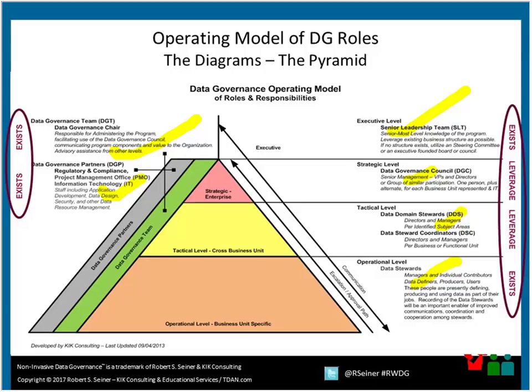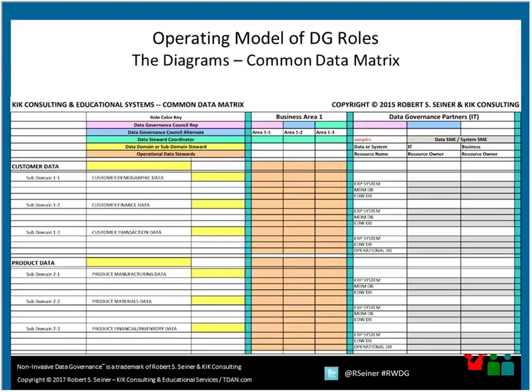If you escalate more than 5 to 10 percent of your decisions to the strategic council, there's a serious shortcoming at the tactical level. My suggestion is that you don't try to plug your organization into this model — instead, overlay it over what already exists. Look to identify operational people defining and producing data, find who you go to for subject matter expertise, and see if a council already exists that you can leverage.